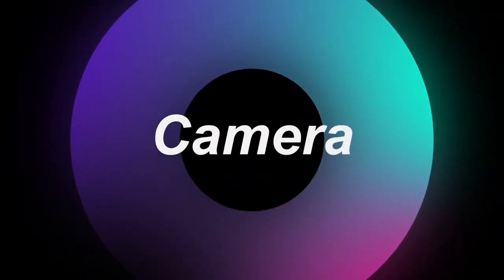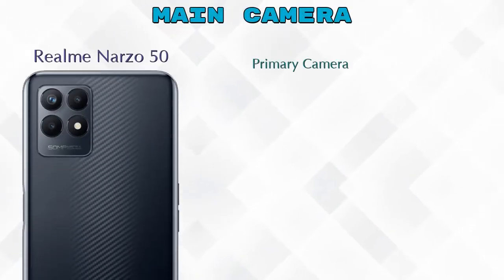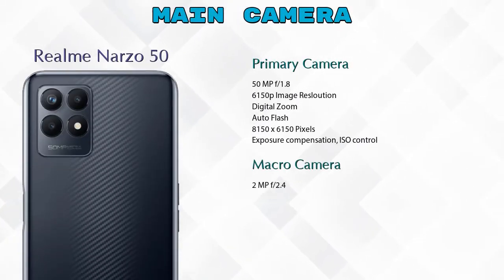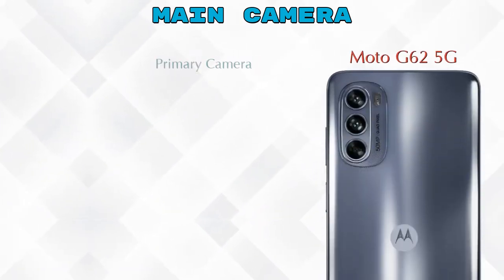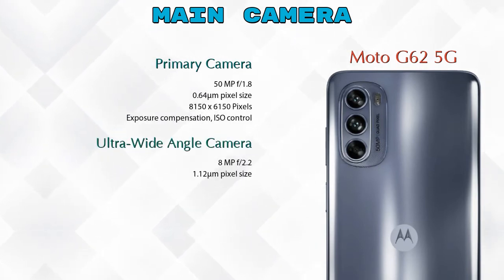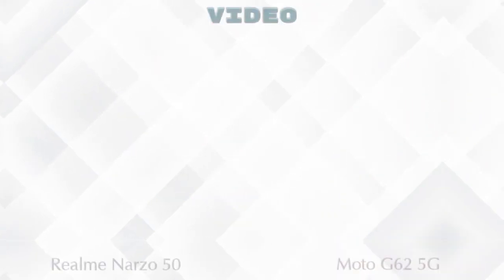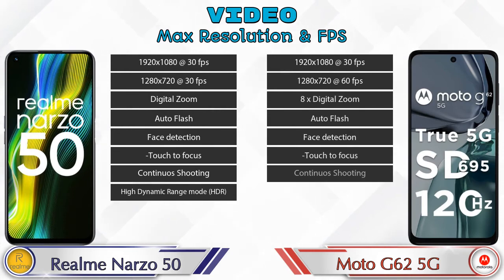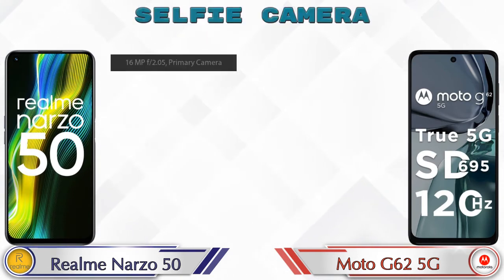Now let's talk about our favorite feature — the camera. For the rear camera, Narzo 50 has three cameras: a primary camera, macro camera, and depth camera. Moto G62 5G also has three cameras: a primary camera, ultra-wide angle camera, and macro camera. For video, both phones have eight different types of features available.